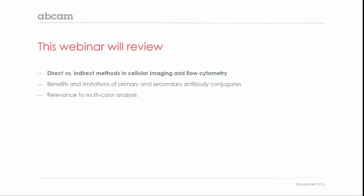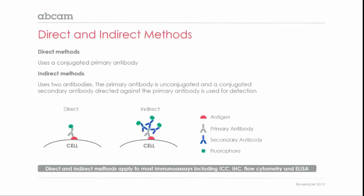Starting with the difference between direct versus indirect methods: direct methods use a conjugated primary antibody. As you can see in the diagram, in a direct method we have the antigen of interest, and the primary antibody detects that antigen. It's the primary antibody that is already conjugated to a fluorophore, enzyme, or protein, providing the signal to detect localization or expression of your antigen.